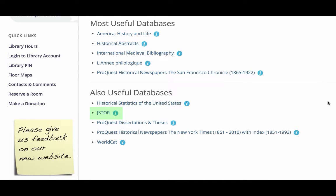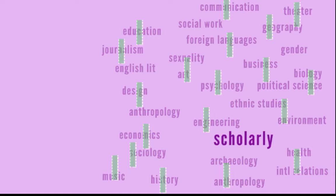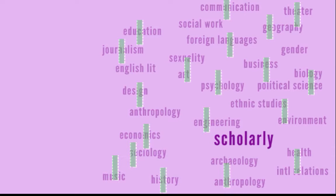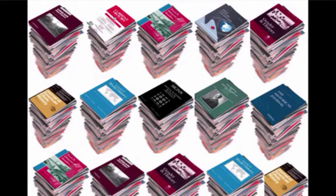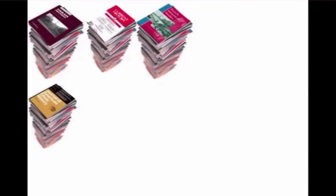Some of you will have used JSTOR before, so I want to talk about why JSTOR is probably not your best bet. The issue with searching JSTOR is that it's very selective about what it includes — JSTOR is primarily a historical archive of scholarly articles. It covers most disciplines, and there are easy ways to focus your search to just one discipline like history.